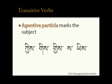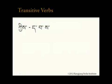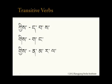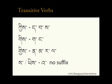Agentive particles can be spelled ki, gi, gyi, s, or yi. After da, ba, or sa, the spelling is gi. After ga or nga, the spelling is gyi. After na, ma, ra, or la, the spelling is gi. After an achung suffix or no suffix at all, the spelling is s or yi. S is added to the end of a word without adding an extra syllable, while yi is attached as a separate syllable.